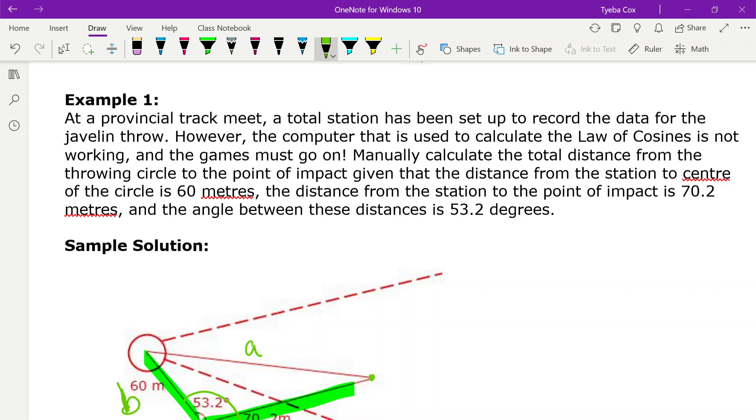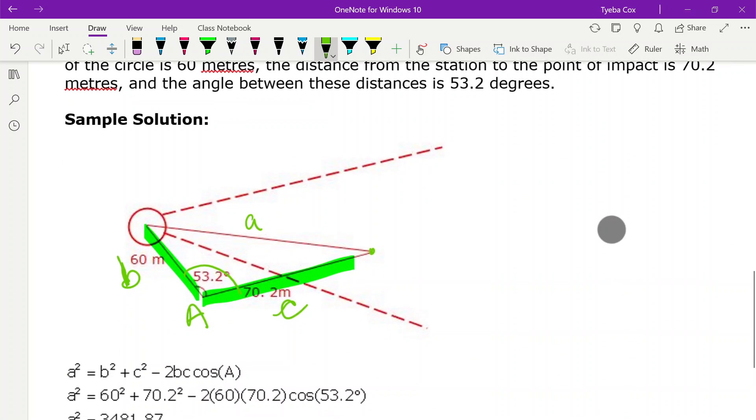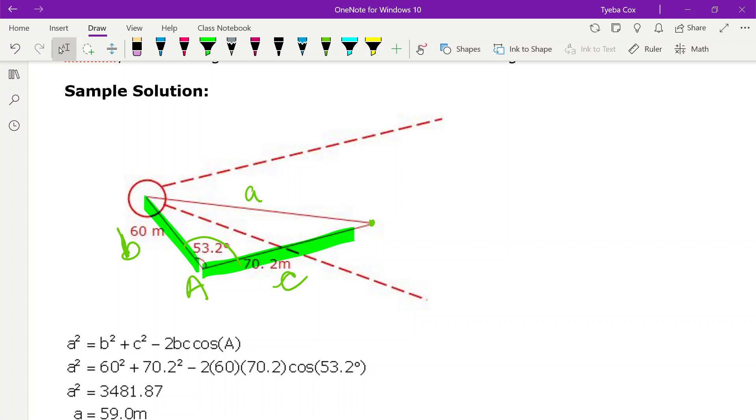So now I've got my formula which is going to be A squared because I'm going to eventually solve for A. So I've got A squared equals B squared plus C squared minus 2B times C times cos of angle A.